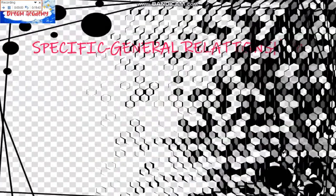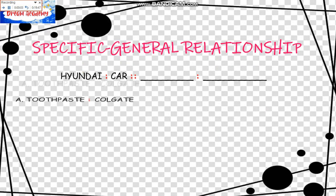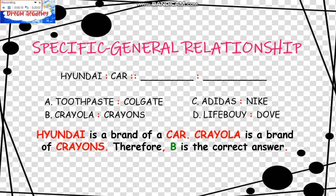The next relationship is the Specific-General Relationship. Hyundai is to Car as blank is to blank. The choices are: A, Toothpaste is to Colgate; B, Crayola is to Crayons; C, Adidas is to Nike; D, Lifebuoy is to Dove. Hyundai is a brand of a car, and Crayola is a brand of Crayons. Therefore, B is the answer. You may say that Colgate is a brand of toothpaste, but the order is different, so it doesn't work.